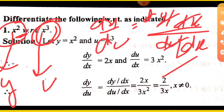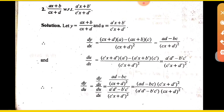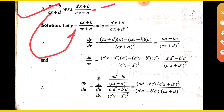Then dy upon du equals dy upon dx divided by du upon dx. Next question: differentiate (ax + b) upon (cx + d) with respect to another function. Here y is this function, and u is the other function. First, you will find dy upon dx.